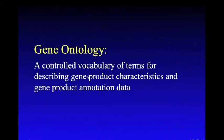Once we do the statistical analysis on differential expression from the microarray data, we'll get a list of significantly up-regulated or down-regulated genes. However, with no context, these genes will not be interesting to the scientific community. We need to know what this list of genes tells us. To understand the biological context and significance of these genes, we need to look at gene ontology.